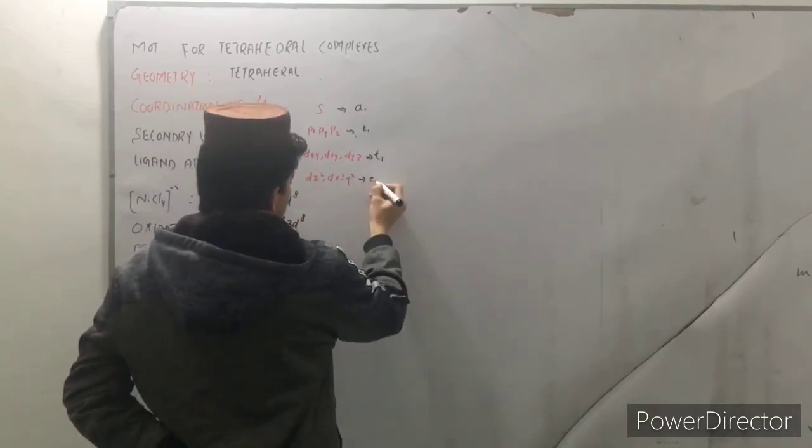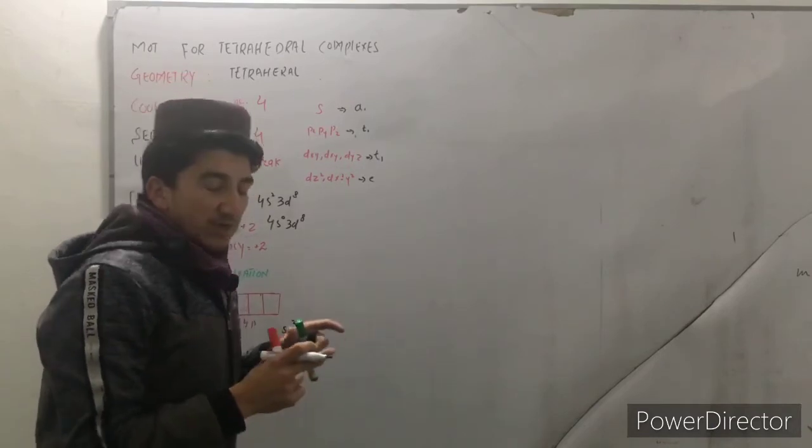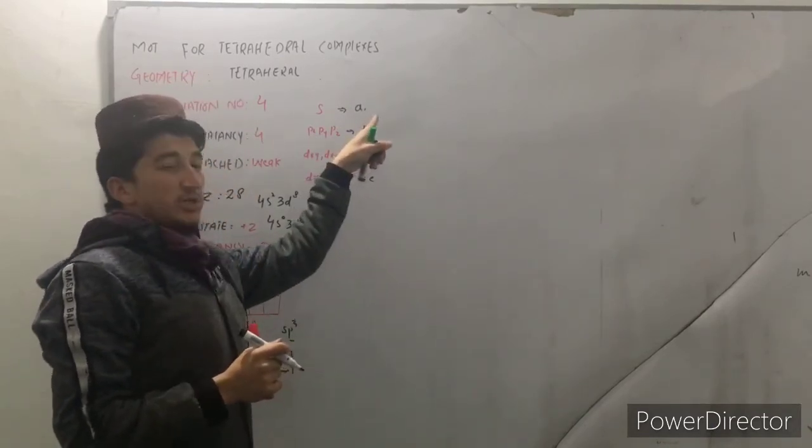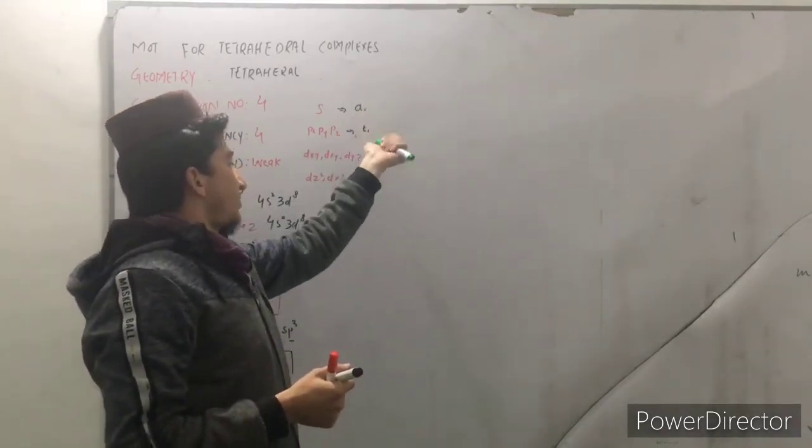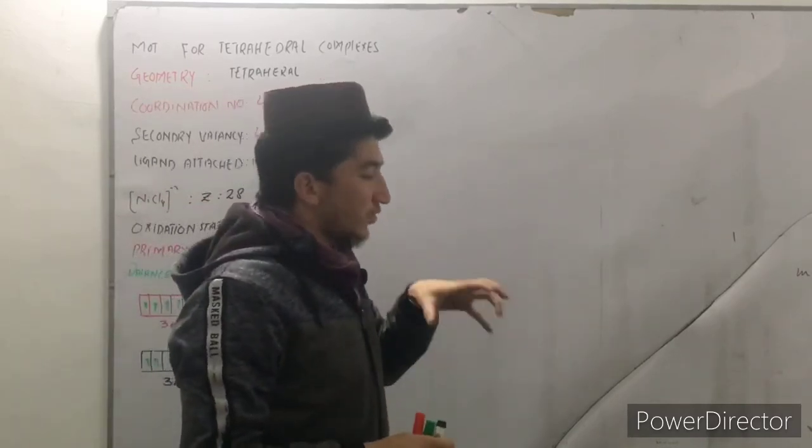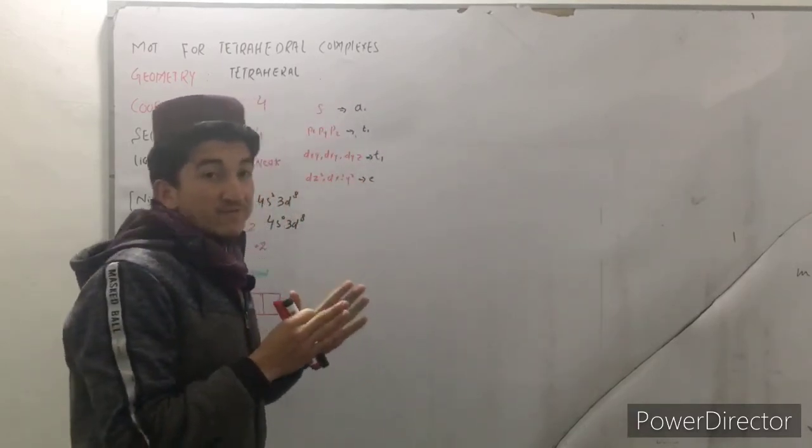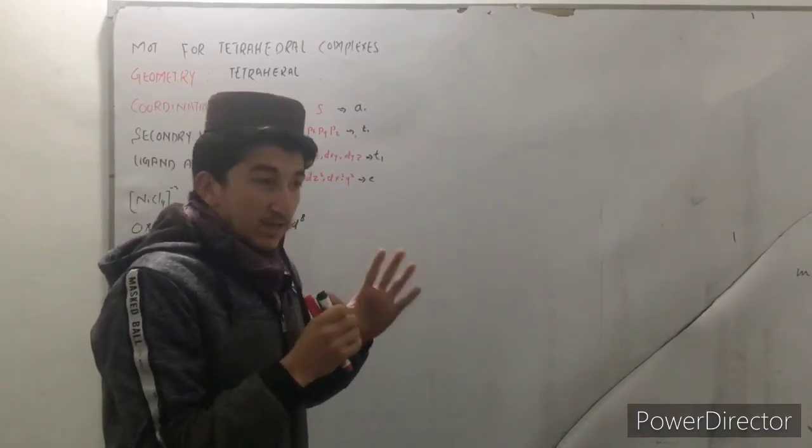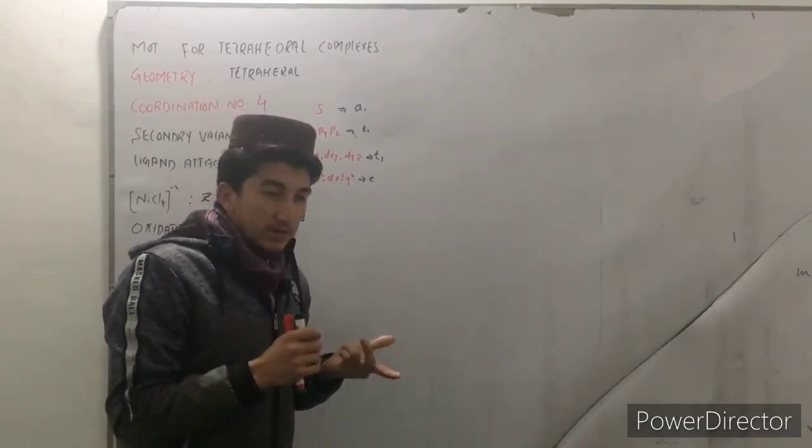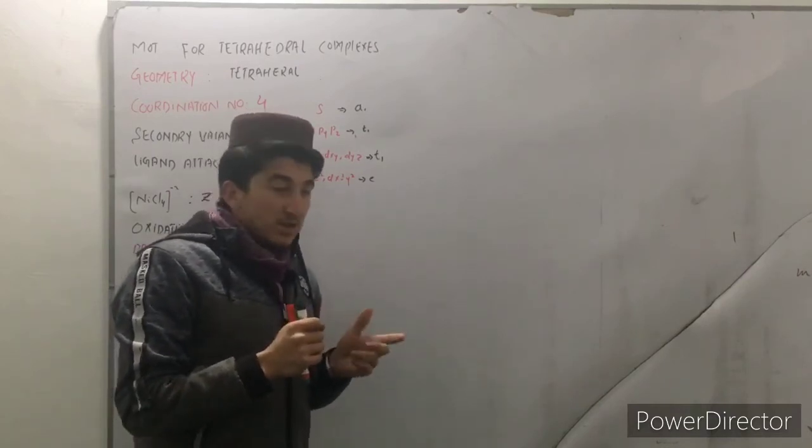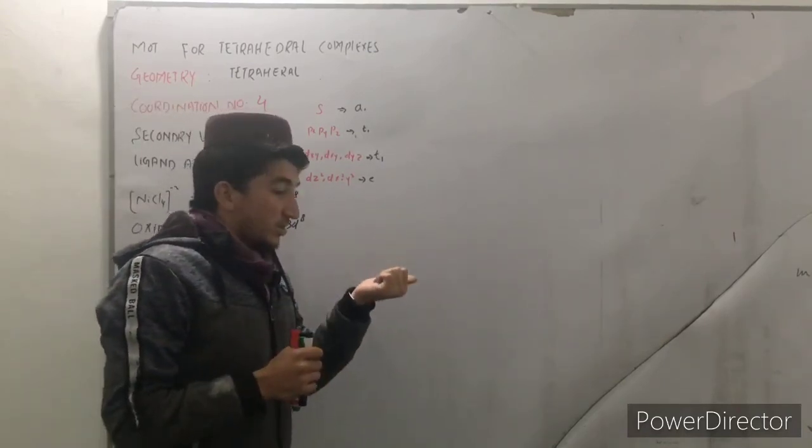Now you will have a question in your mind. If you have watched the video for octahedral complex, I have written over here t2u but here I only write t and a. That's because simply you know that octahedral complexes have symmetry and tetrahedral molecules don't have symmetry. So the g which is known as, and u which is known as, some people call it gerade, some people call it ungerade.